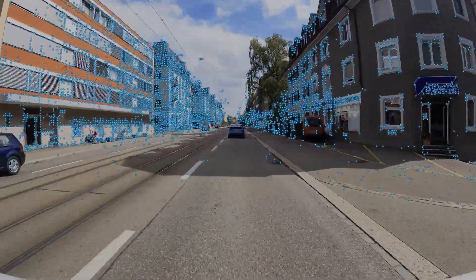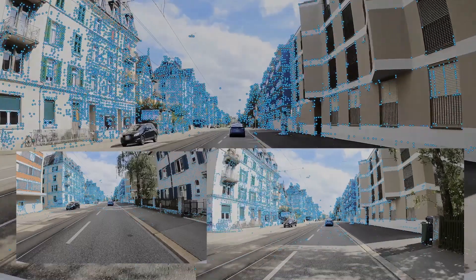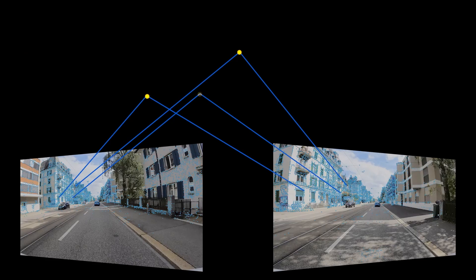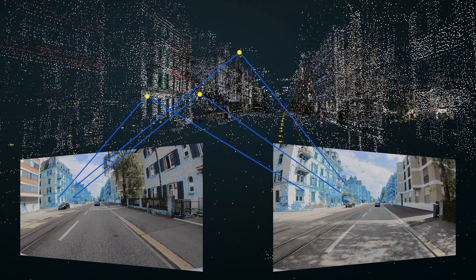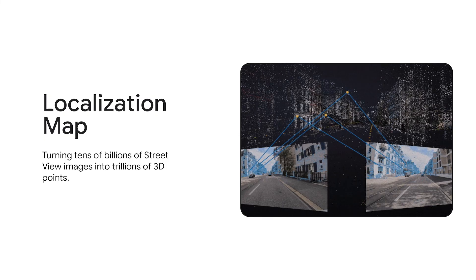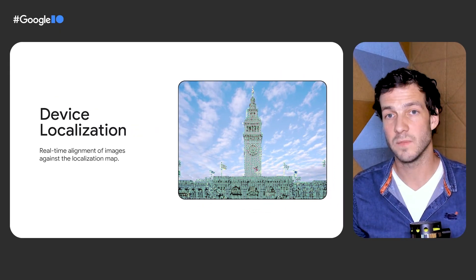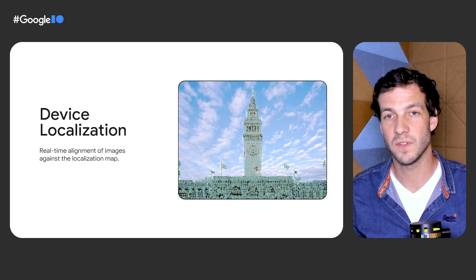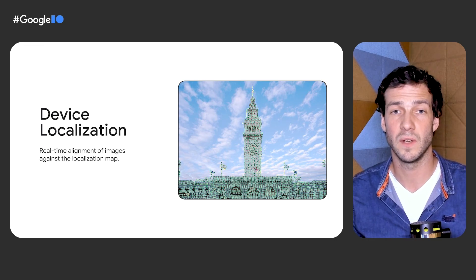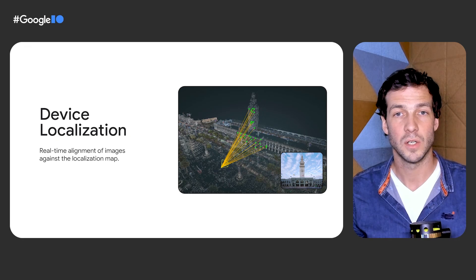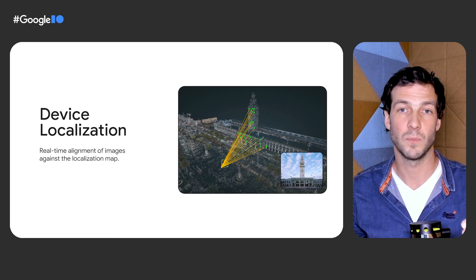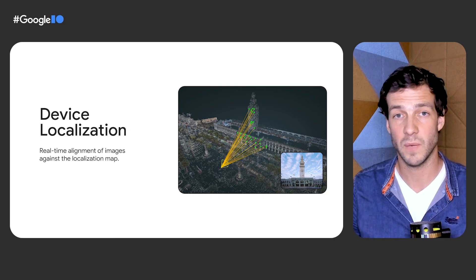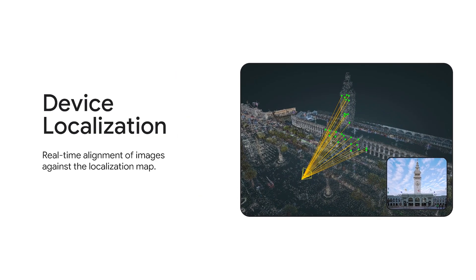The algorithm has learned to focus on buildings instead of cars. We then combine these salient points across tens of billions of images to compute a 3D point cloud of the environment. This localization model consists of trillions of points and spans nearly all countries with Street View coverage. When your device makes a request to the Geospatial API, a similar process is applied to the image. A neural network processes the pixels to find recognizable parts of the environment and matches them to the localization model. Computer vision algorithms then compute the position and orientation of the device that is sent back to you.